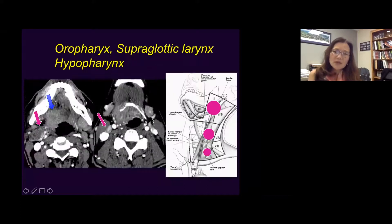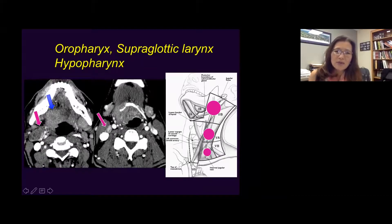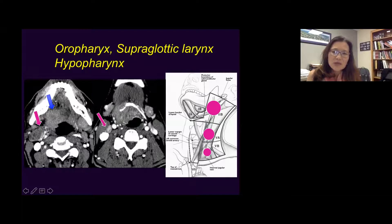When you go to oropharyngeal cancer — which is at the level of the oral cavity but further in the posterior pharynx — this is an example of a base carcinoma extending to the pre-epiglottic space. You have a level 2 and a level 2-3 junction lymph node, and also contralateral nodal metastasis at level 2. So oropharyngeal, supraglottic larynx, and hypopharyngeal cancers tend to metastasize to levels 2, 3, and 4.